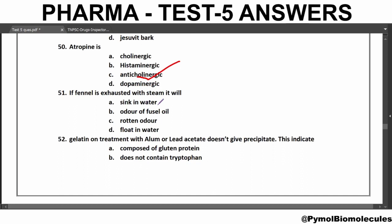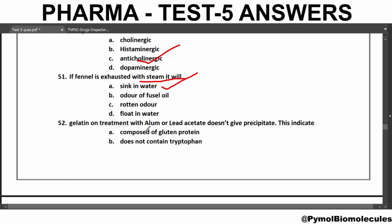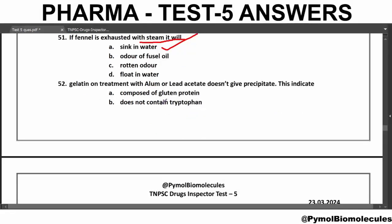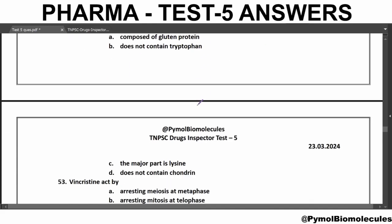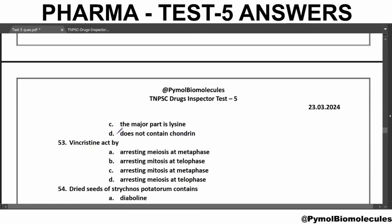If fennel is exhausted with steam, it will sink in water. The fennel will give the odor of fusel oil if exhausted with alcohol. Gelatin on treatment with alum or lead acetate does not give a precipitate, indicating that it does not contain chondrine. Vincristine acts by arresting mitosis at metaphase. Dried seeds of Strychnos potato rum contain diabolin.